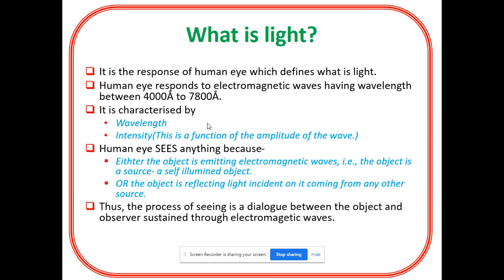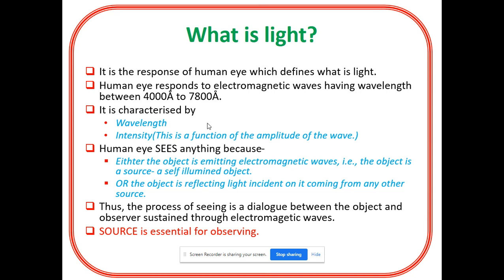Thus the process of seeing is a dialogue between the object and observer sustained through electromagnetic waves. So the important thing here is source is essential for observing. To observe anything we need a source.